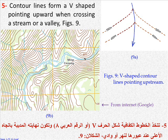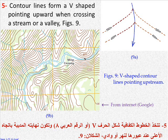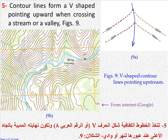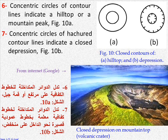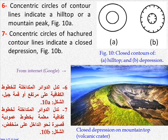Rule 5: contour lines form a V-shape pointing upward when crossing a stream or a valley — figure 9. Rule 6: concentric circles of contour lines indicate a hilltop or a mountain peak — figure 10a. Rule 7: concentric circles of hachured contour lines indicate a closed depression — figure 10b.